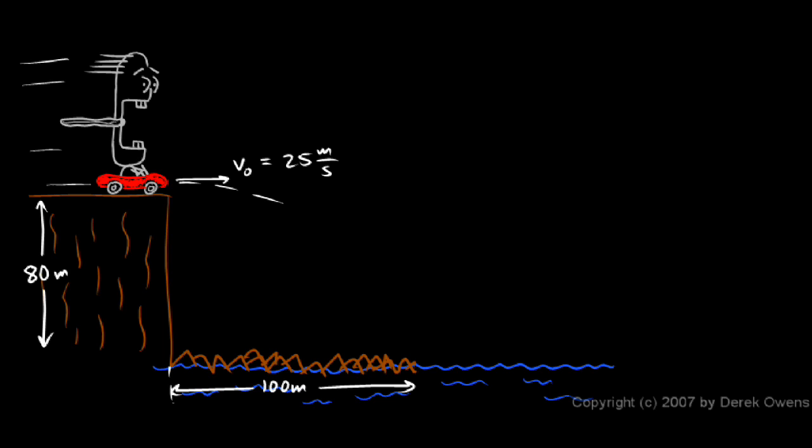He comes down and we'll figure out if he clears the jagged rocks or not. 25 meters per second, he's going horizontally at 25 meters per second off of an 80 meter cliff. We want to know how long it takes him to fall and how far away from the base of the cliff he lands. We'll assume that t equals zero is the moment that he leaves the cliff right there.